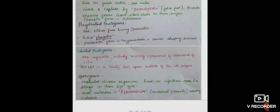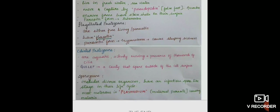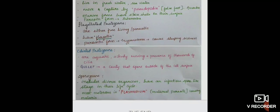Sporozoans include diverse organisms. They have an infectious spore-like stage in their life cycle. The most notorious one is Plasmodium which causes malaria. Plasmodium is also called malaria parasite.